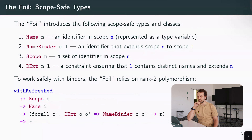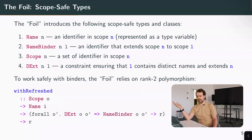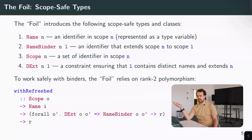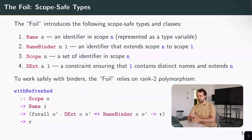The Foil introduces scope-safe types and classes to ensure type safety. For example, Name n is the type of an identifier that is valid in scope n, where n is a type variable tracked statically by the Haskell type checker. We use these type variables to make sure we do not misuse names or accidentally use names from one scope in a different scope. NameBinder n l is a type of an identifier that extends scope n to scope l, with constraints ensuring l contains distinct names and indeed extends n.